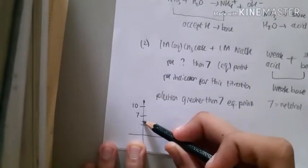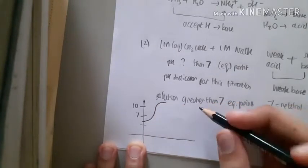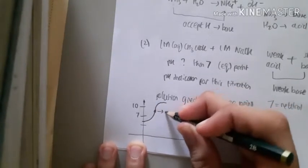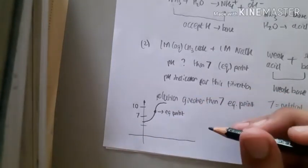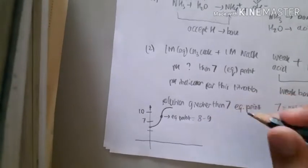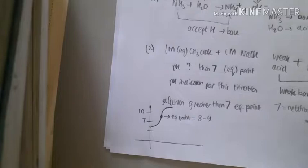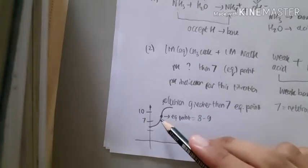When you add it, the curve will move this way. So this is the equivalent point. The point where the pH value drastically changes. And this equivalent point proved to be 8 or 9 the pH value. Therefore, the solution becomes greater than 7 in equivalent point.